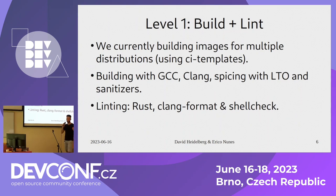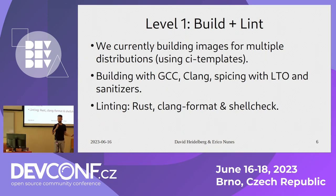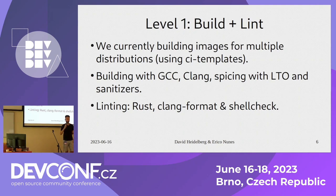For build testing, we're using GCC and Clang. We have around 20 build tests just for building different combinations with different options, like LTO. We use address sanitizers and memory sanitizers to test everything we can offline without hardware. For linting, we use Rust linting and Clang format. And for CI scripts, we're using shellcheck — we'll get to why.